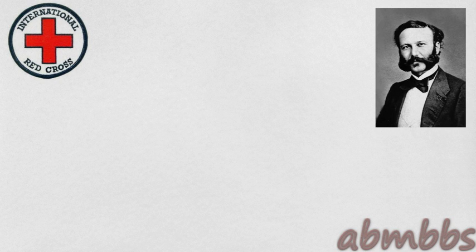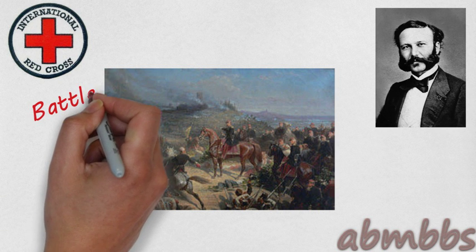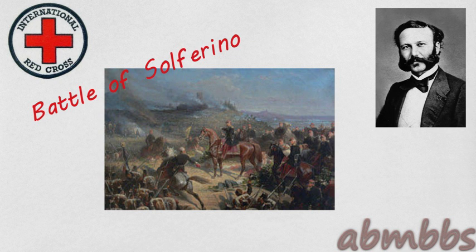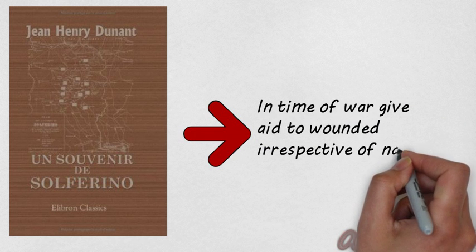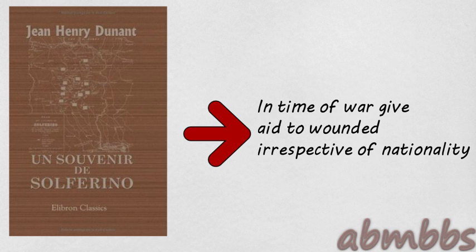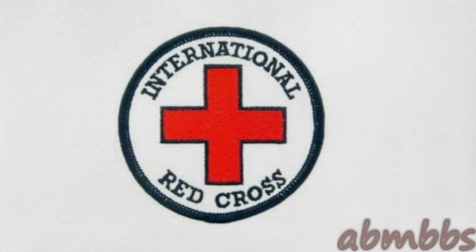Finally, we come to the story of the International Red Cross Society. There was once a young Swiss businessman named Henry Dunant who, while passing through North Italy, came across the Battle of Solferino. Seeing the plight of the wounded soldiers, he recruited some local volunteers and helped them. He later wrote a book named 'Un Souvenir de Solferino', in which he propagated the idea that in time of war, the wounded should be given help irrespective of nationality. Dunant's plea was accepted and the International Red Cross Society was set up with its headquarters in Geneva.